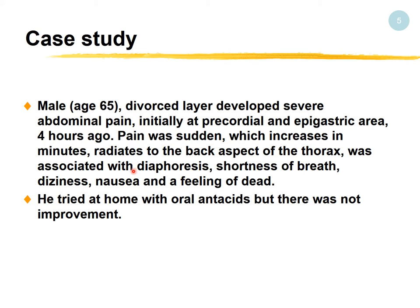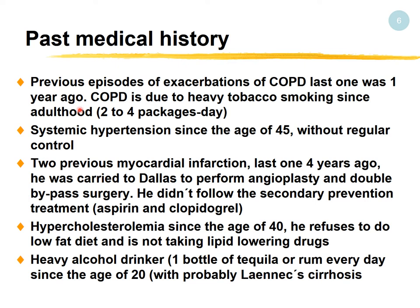He tried antacids at home but there was no improvement. As mentioned, this could be an MI, especially the inferior one, where pain can occur in the epigastric area. In past medical history, he previously had an exacerbation of COPD, possibly because he was smoking, one year ago.